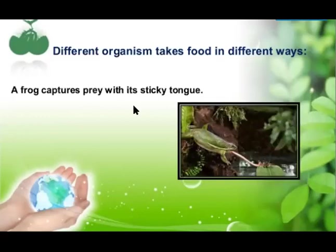The frog captures its prey with its sticky tongue. The frog keeps its long tongue inside its mouth in a rolled-up way. Unlike our tongue which is attached from the back, the frog's tongue is attached to the forward side of its mouth. When it has to catch prey, it releases the tongue with pressure and captures its prey.